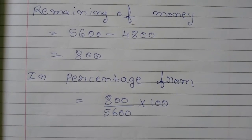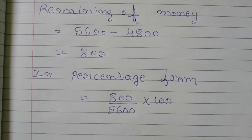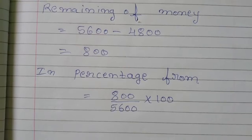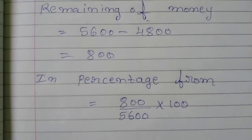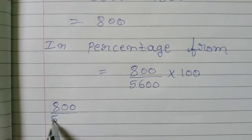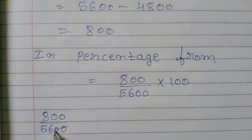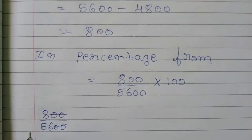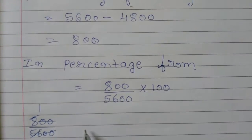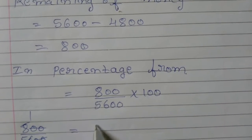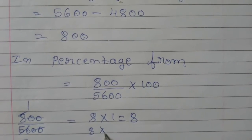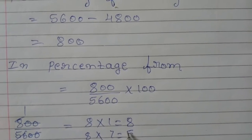Reduce the fraction 800 by 5600 to lowest terms by extending and canceling out 8. 8 ones are 8, 8 sevens are 56.